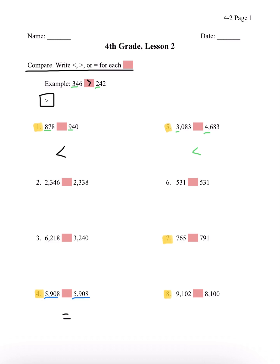Number 7, we have 765 and 791. We can see that the first digit is a 7 for both, so they're the same in the 100th place. So what you have to do is look at the digits behind it. We have a 6 and a 9 — 9 is bigger than 6, so 765 is less than 791.